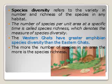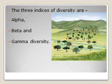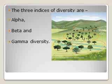The more the number of species in an area, the more is the species richness. Species diversity is measured by three indices: alpha, beta, and gamma. In the diagram, there are three levels. Alpha diversity refers to one region — the number of individuals and species within that community.